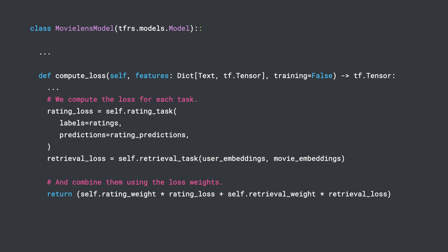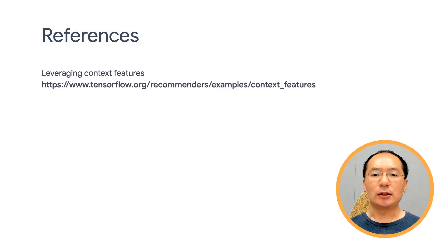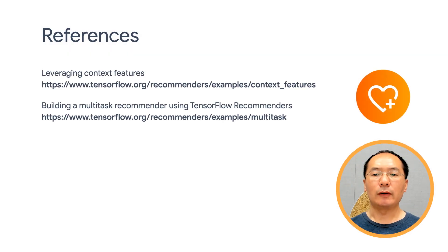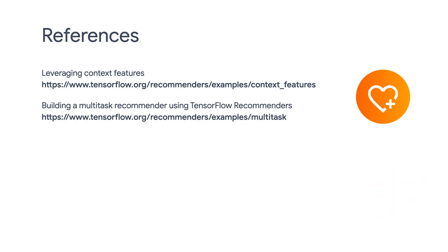That's all. We can now call the standard Keras compile method and fit method to train our multitask recommender, assuming we have done the data preprocessing as well. As you can see, it's actually fairly easy to build a multitask model within the framework of TensorFlow Recommenders. Just to summarize, today we discussed how to leverage context features and multitask learning to improve your model accuracy. I've put together some links for you to check out if you want to learn more. In the next video, we'll be showing you deep and cross networks. See you next time.